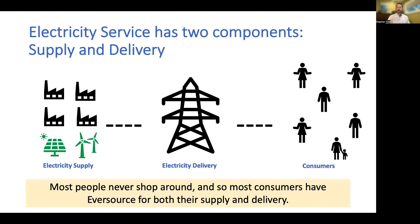To understand how a CEA works, it is first important to understand how basic electricity service works. In Needham, Eversource is our electricity delivery company. It controls the physical power lines and other infrastructure that takes electricity from its source to our homes and businesses. Eversource is also the default electricity supplier, which means it owns and operates the plants that generate the electricity it carries on its power lines. Unless you ask Eversource to use a different electricity supplier, it chooses its own electricity plants for you.